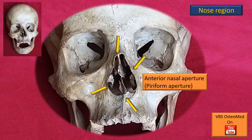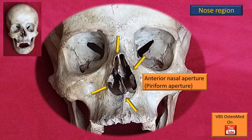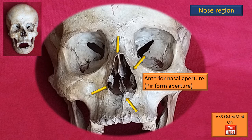This is the part that actually presents in Norma frontalis — the nasal region. The arrows have been placed at the periphery of the nose, and this bounding area is the anterior nasal aperture, also known as the piriform aperture. The actual nose is slightly different from this because septal and lateral cartilages give the final shape to the nose, which is then covered by skin.